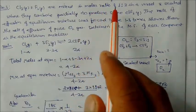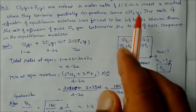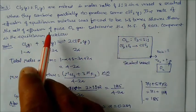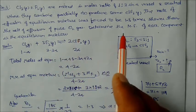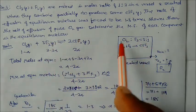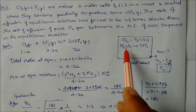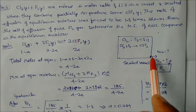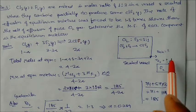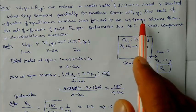Problem 3: Cl2 and F2 are mixed in a molar ratio of 1:3 in a vessel and sealed, where they combine partially to produce some ClF3 gas. The rate of effusion of the equilibrium mixture was found to be 1.3 times slower than the rate of effusion of pure oxygen gas. Find the degree of association α.